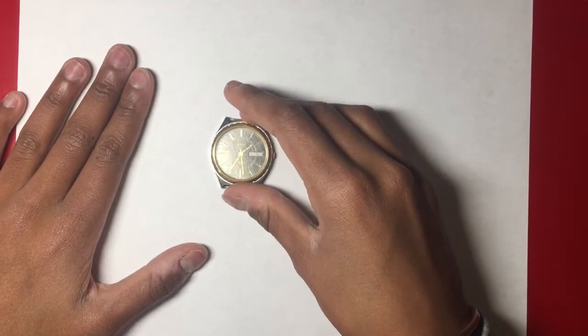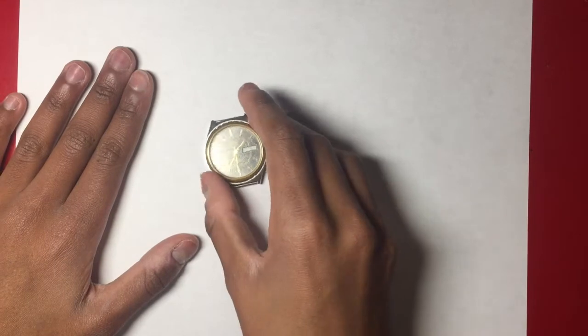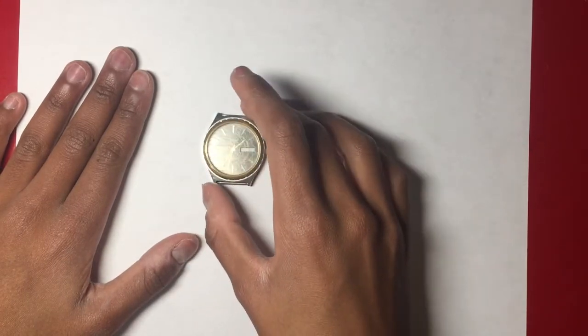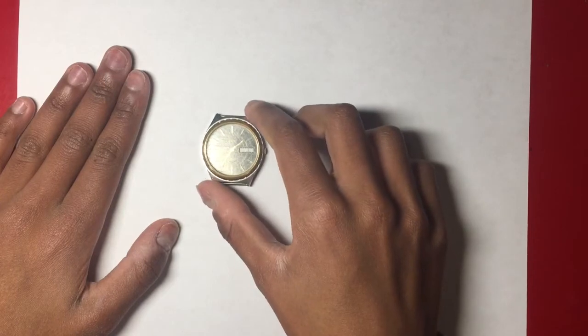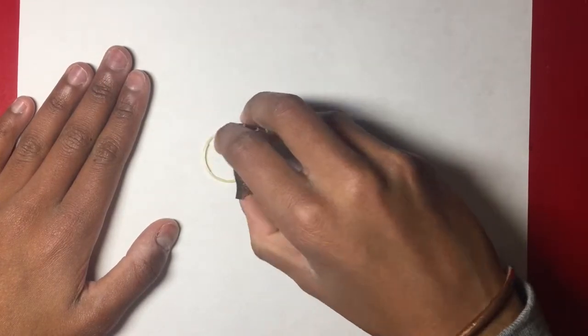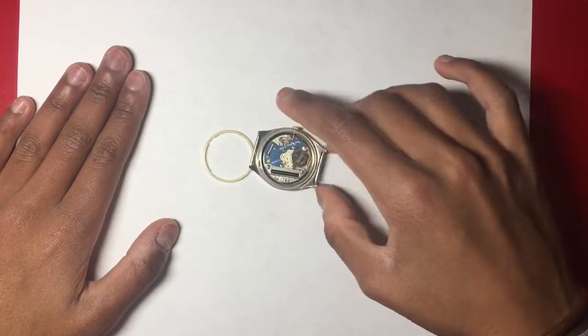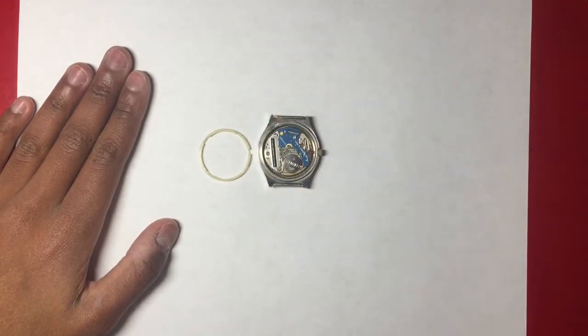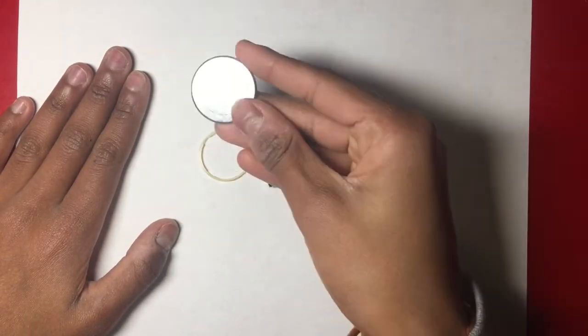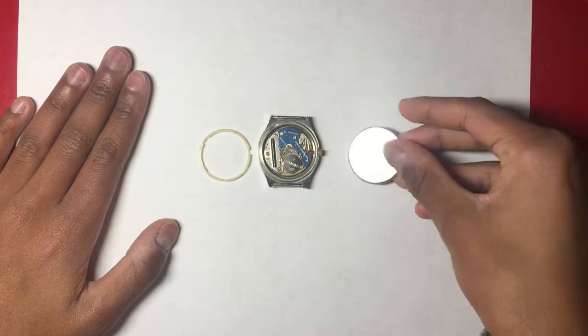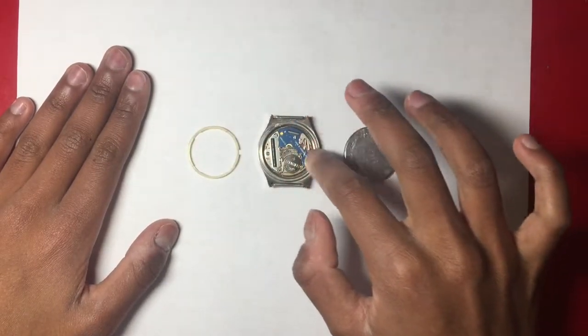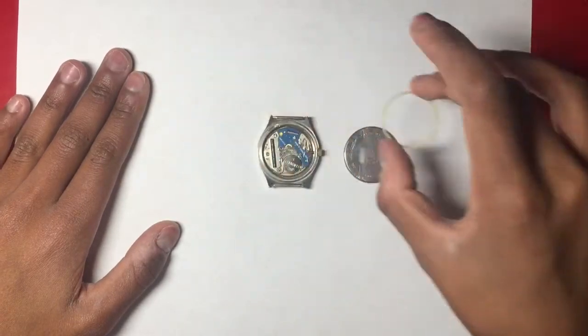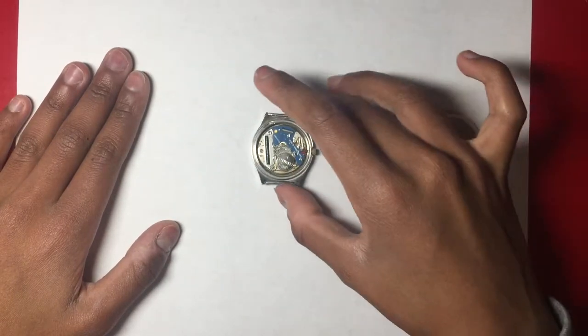But today we're going to be restoring this one and it has a lot of scratches on the glass, so much that it is clouded over and some more minor abrasions on the case. I've already gone ahead and taken the back of this watch off, and here's the back which you can see we'll also be polishing. This is a plastic ring that goes around here to align everything.